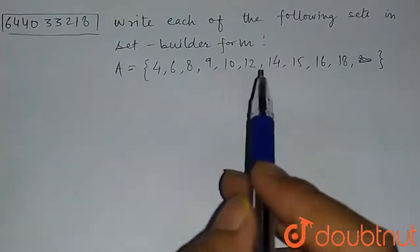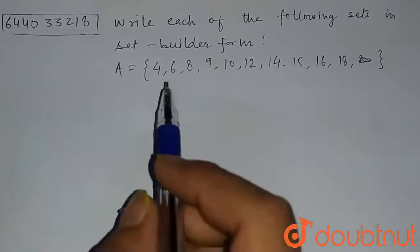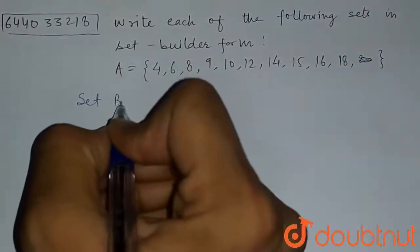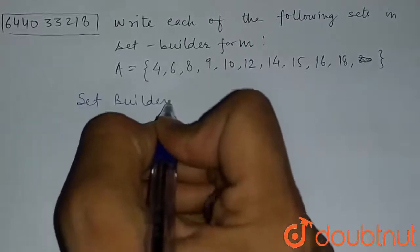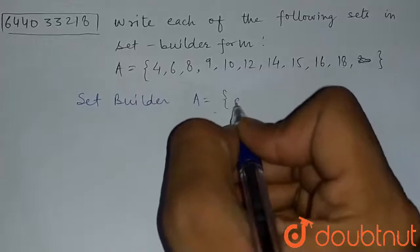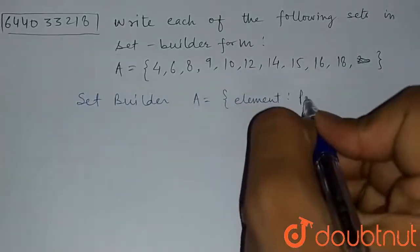The given form is roster form and we have to convert to set builder form. So set builder form is written like A is equal to element and its property.